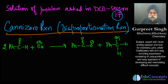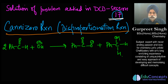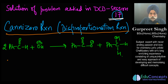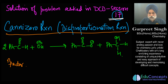Hello students, welcome to today's session. Today we shall be discussing a question from session number 17. In that session, I talked about the Cannizzaro reaction, aldol condensation, and ozonolysis, and I asked you to find the n-factor of benzaldehyde during the Cannizzaro reaction. Here I shall be proving that benzaldehyde underwent a disproportionation reaction and evaluating its n-factor.